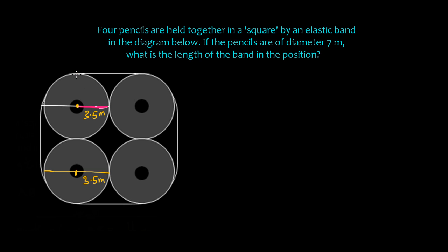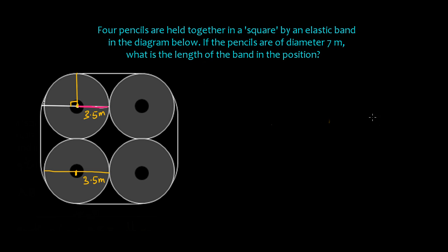If a straight line comes from the circumference of the circle, the angle from here will be 90 degrees. If we have a straight line and a perpendicular bisector dividing it into two parts, the angle must be 90 degrees. We'll apply the same concept here.